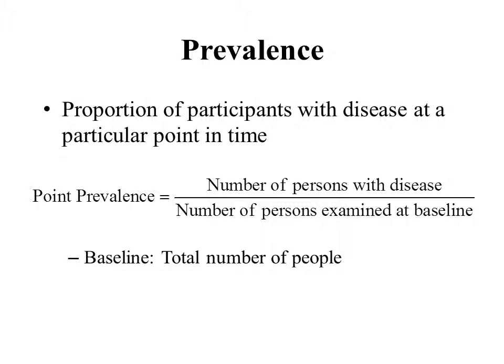Let's start off with our first definition: prevalence. Prevalence is the proportion of participants, or people, with a disease at a particular point in time. Specifically, we're defining here what the book calls the point prevalence. We can calculate that by taking the number of persons with the disease divided by the number of persons examined at baseline.